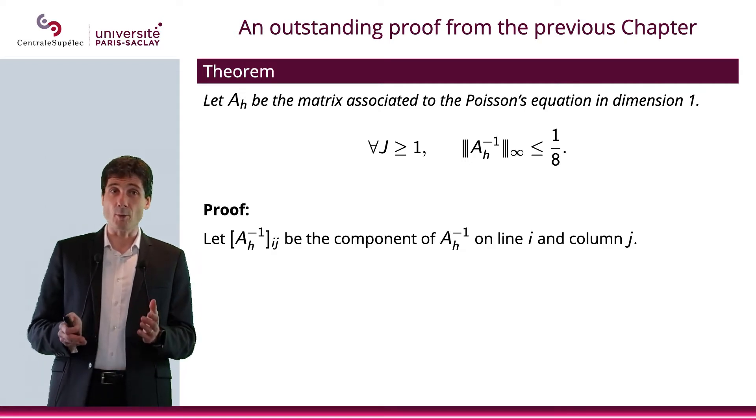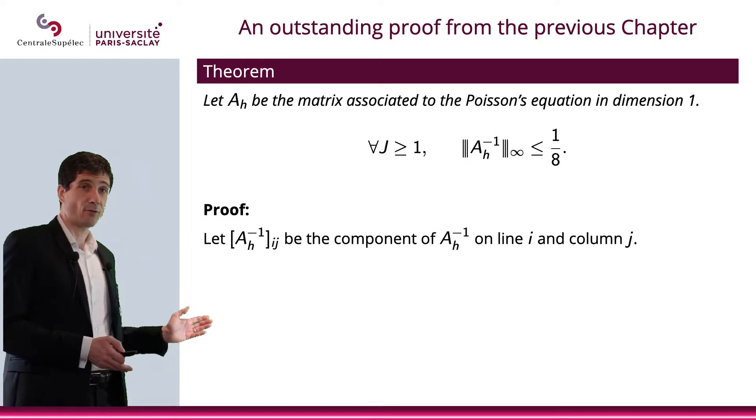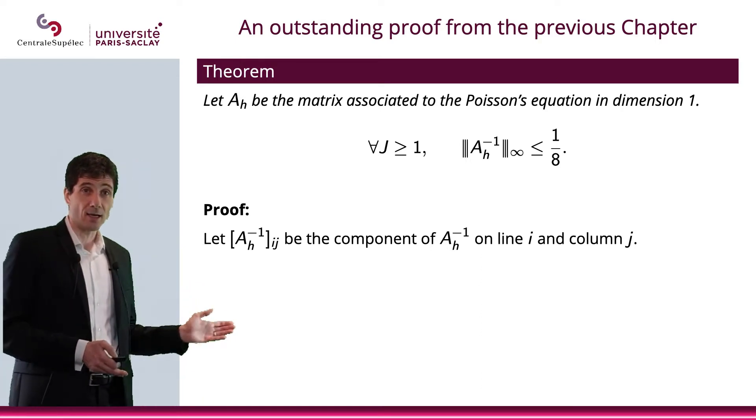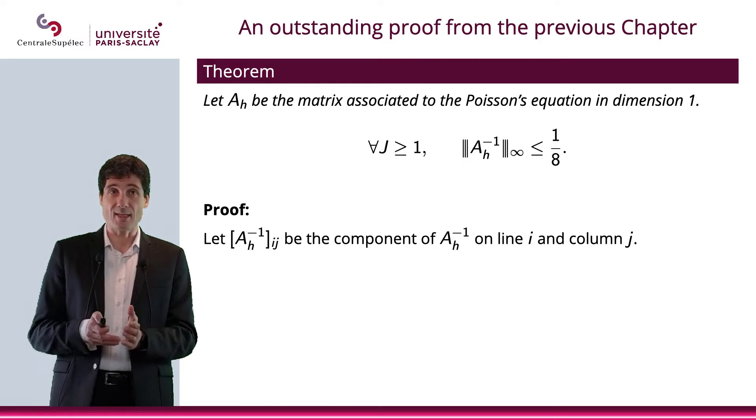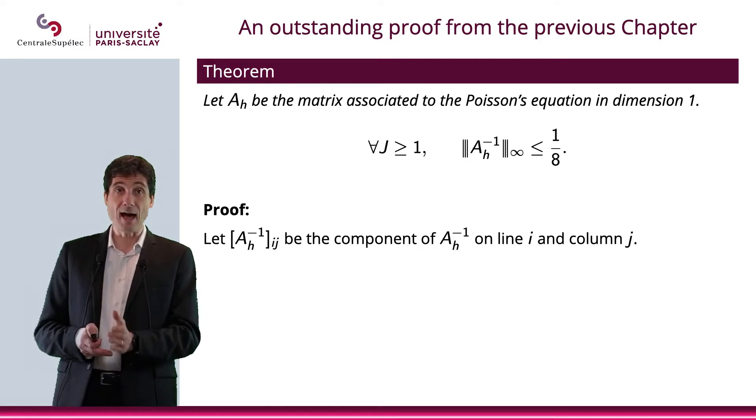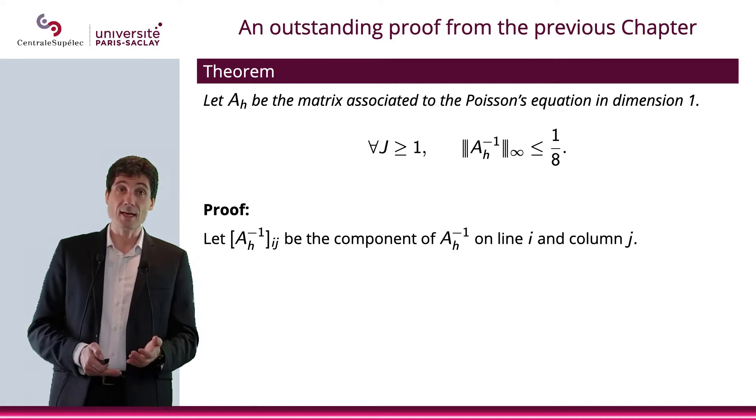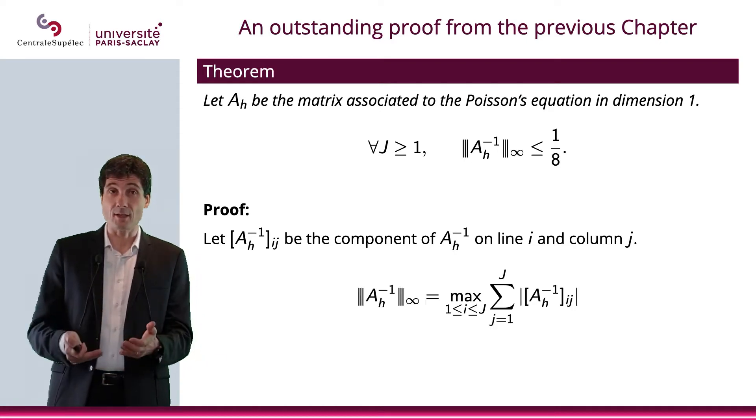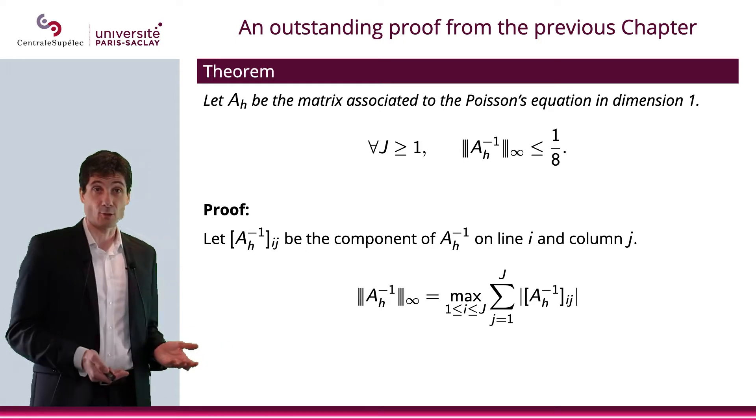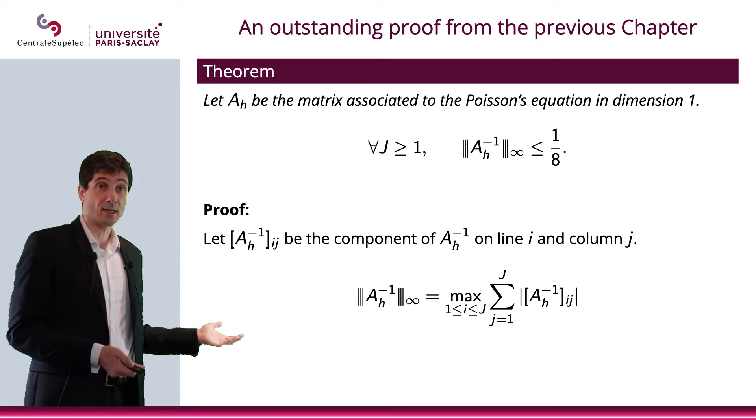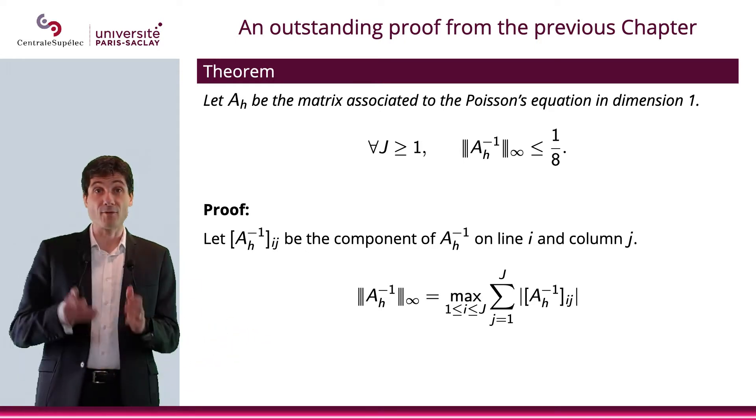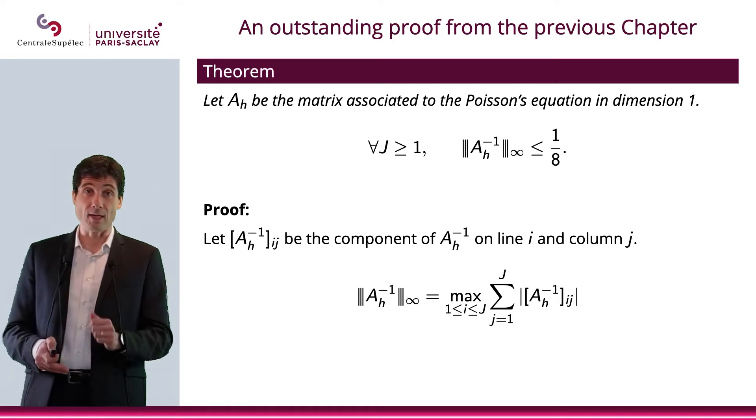First, I'm going to denote by A_H inverse ij, the component of the matrix A_H inverse at the line i and column j. Now, what I will say is that the norm infinity of this matrix, the inverse of this matrix, is given by this formula as we've just seen in the previous video.